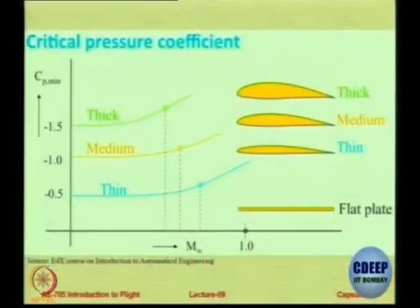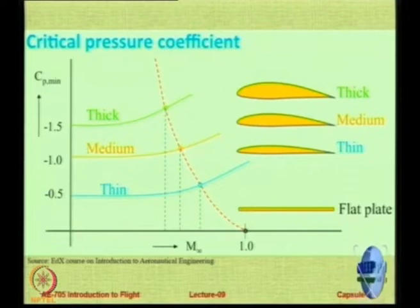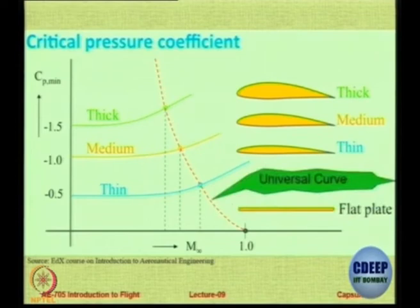For a thin aerofoil you can fly to higher free stream Mach numbers before reaching the critical Mach number. For a medium thickness it is less, and for a thick aerofoil it will start increasing sooner. There is a line which gives the locus of the location of the critical Mach number — this line is a universal curve. It does not change with whether it is a thick or thin aerofoil; there is a curve which can be applied to almost any geometry.